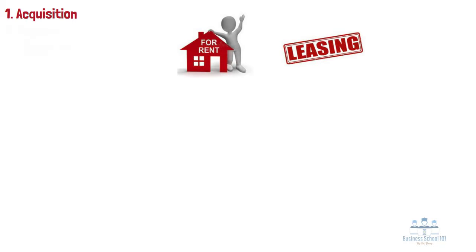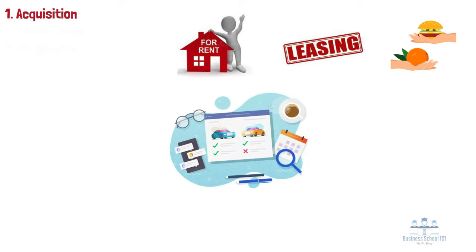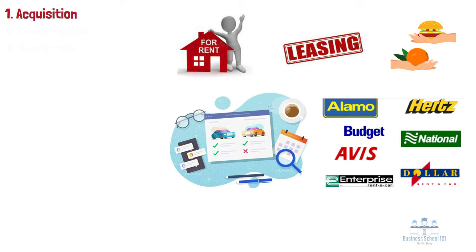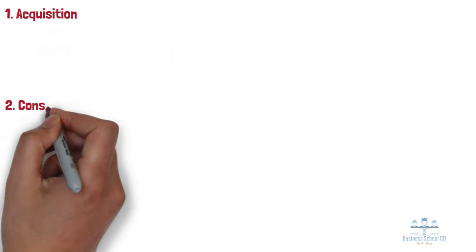First, acquisition. The acquisition includes various ways of obtaining offerings, such as renting, leasing, trading, and sharing. For example, consumers will compare the price of rental cars in different stores such as Enterprise, Budget Car Rental, or Avis, and then they will rent a car that meets their criteria.